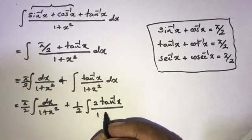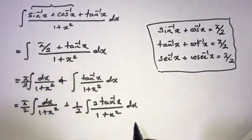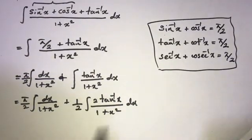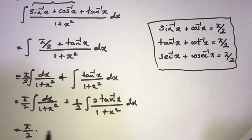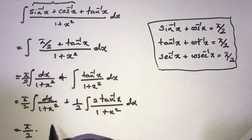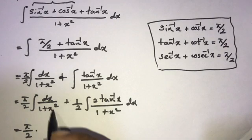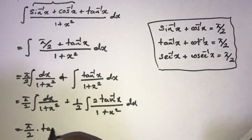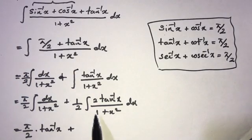Over 1 plus x squared dx. We know π over 2 times the integration of 1 over 1 plus x squared is equal to π over 2 times tan inverse x. Now we handle the integration of the remaining part.